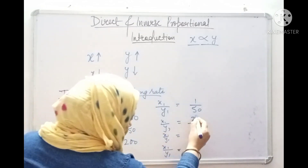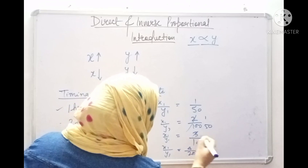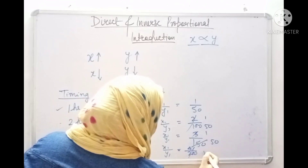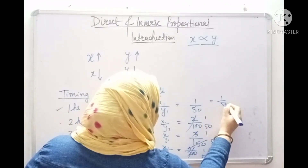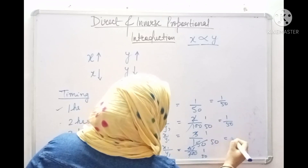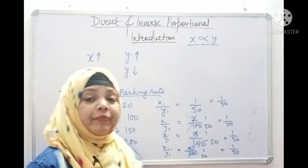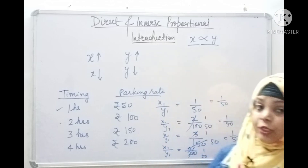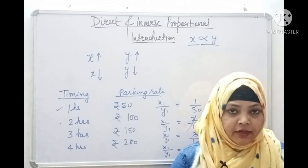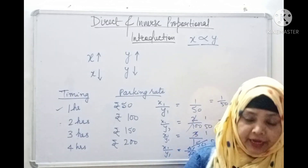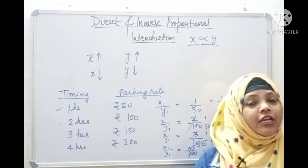Now let's convert these into simplest form. 2 by 100 simplifies to 1 by 50. 3 by 150 simplifies to 1 by 50. 4 by 200 simplifies to 1 by 50. We see that all the ratios are equal. When all the ratios are equal, then it is said to be direct proportion. So when it is direct proportion, all the ratios are equal.